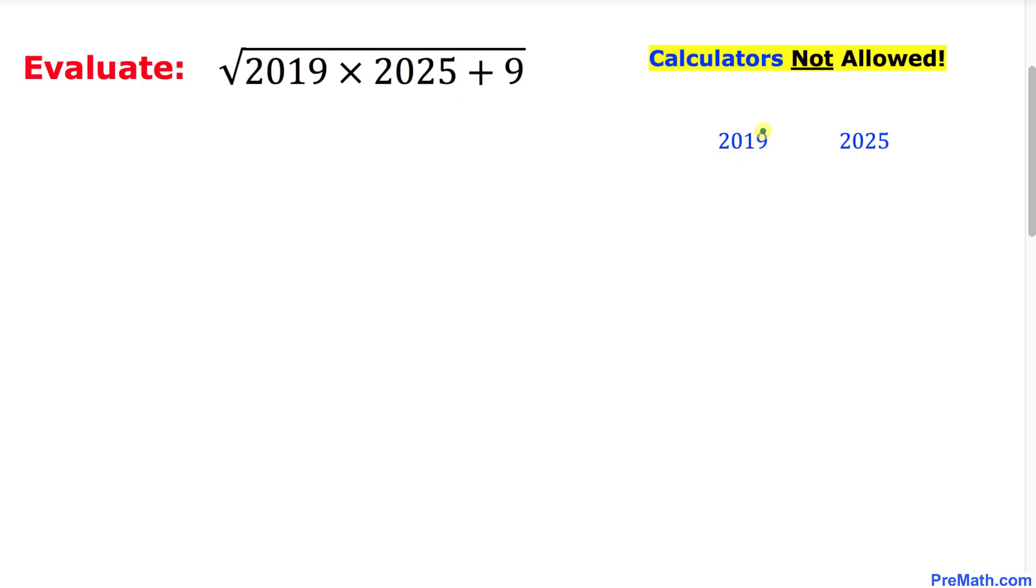I have copied these numbers down and we can see the difference between these two numbers is six. Now since this six is an even number, let's take the half of this. One half of the six is three.